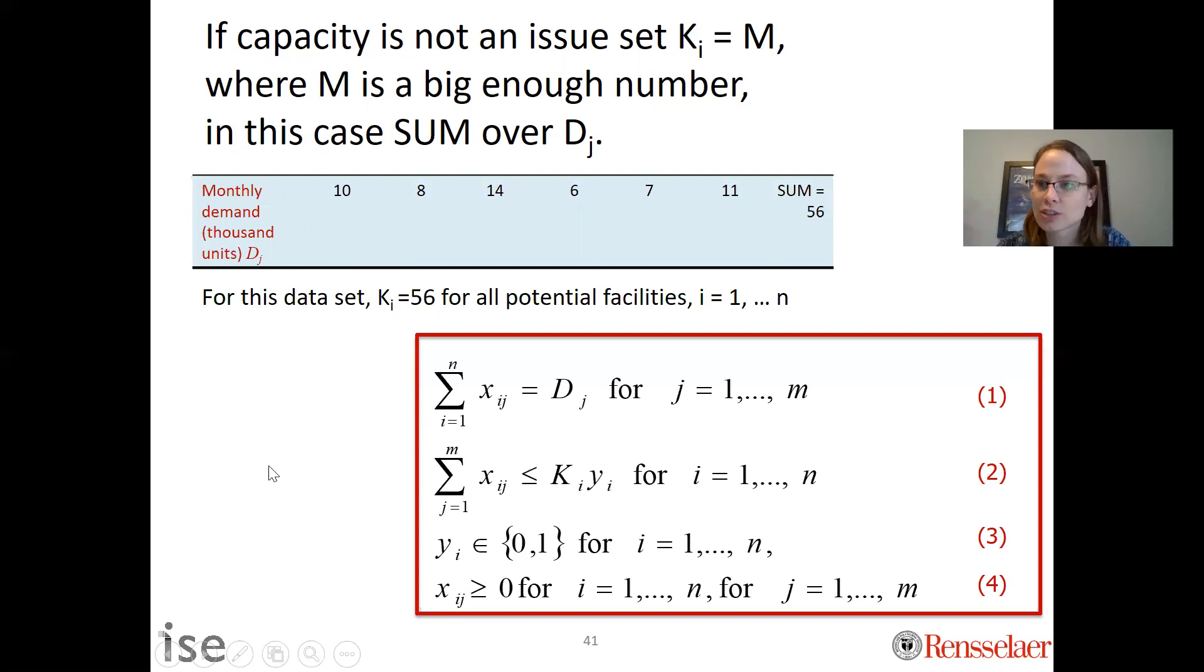As a reminder, ki is an input parameter, so you're not changing anything fundamentally about the model. But it is wrong to delete constraint two, because without it you have no tying together the y's and the x's in your optimization formulation.